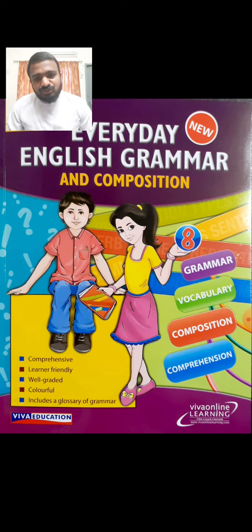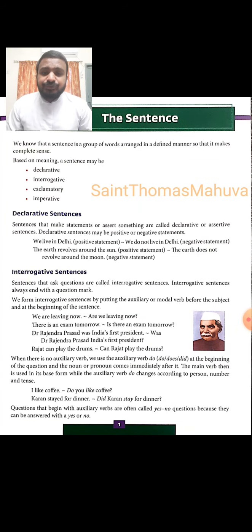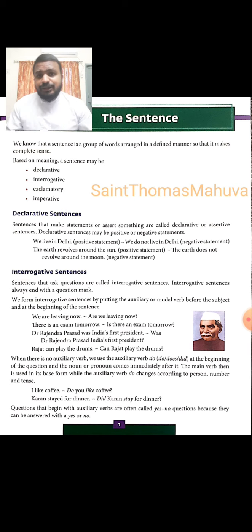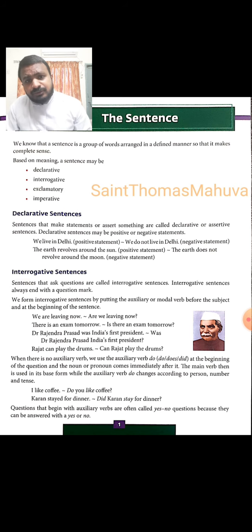Friends, this is our textbook — as you can see, this is a colorful picture. I wish and pray that your life at St. Thomas must be a colorful one. In the first chapter, we are going to discuss about the sentence. As you know, a sentence is a group of words arranged together in a particular manner in order to make a complete sense. There are four kinds of sentences: declarative or assertive, interrogative, exclamatory, and imperative.